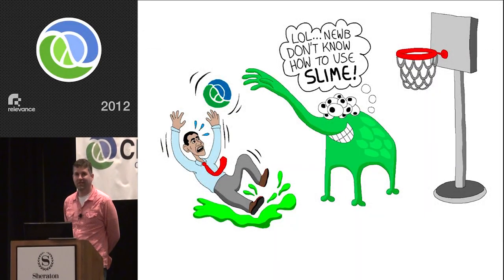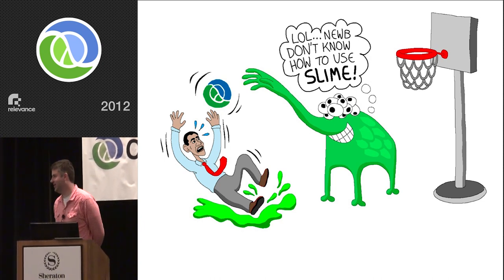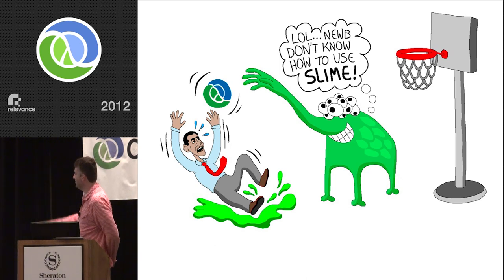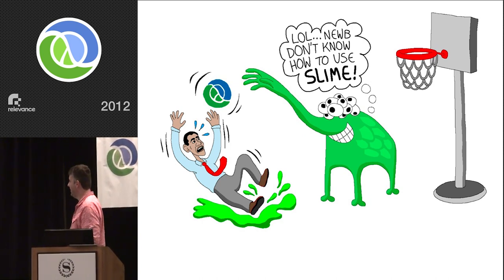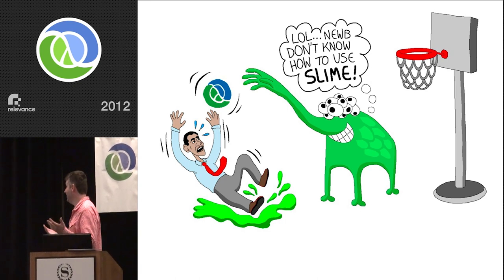Hi everybody. When I give a presentation, I'm pretty much contractually obliged to have some Lisp cartoons in there somewhere. I was thinking about what kind of Lisp cartoon to start with, and I wanted to bring in the whole politics thing. The Clojure logo could be kind of like a basketball, so Obama has to trip on something — and the solution, of course, was SLIME.